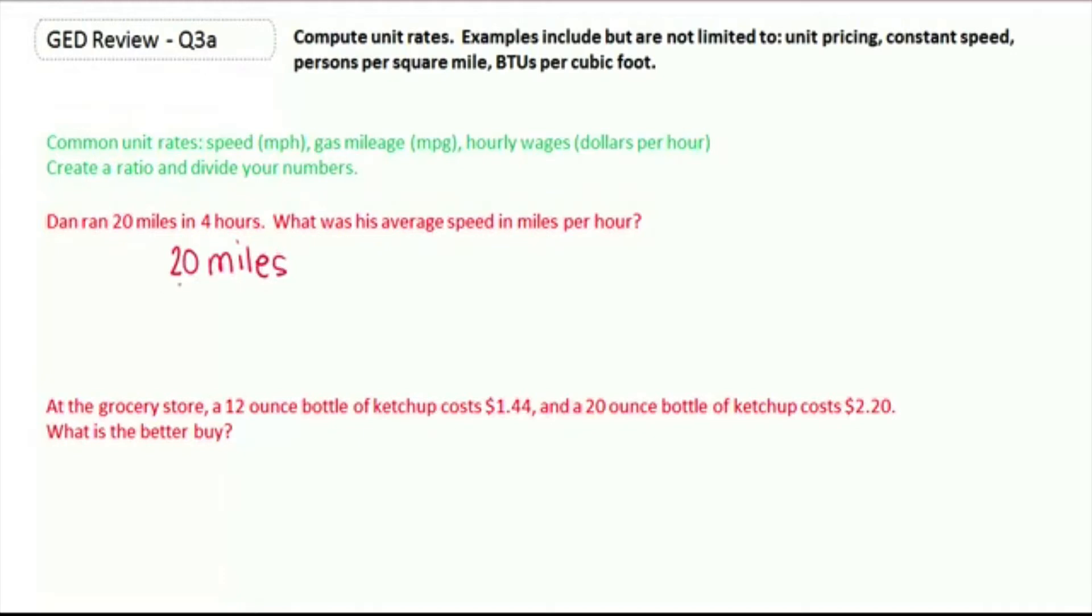So 20 miles over 4 hours. A unit rate means your denominator is 1. If we want to get our denominator to be 1, we'd take that 4 and divide it by 4.